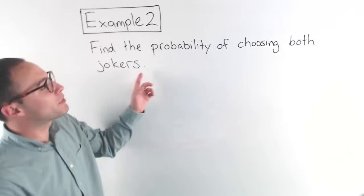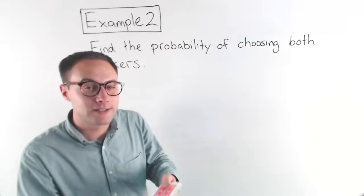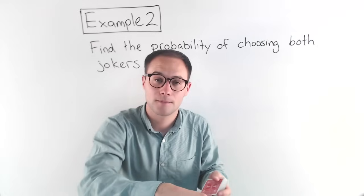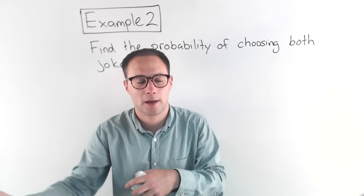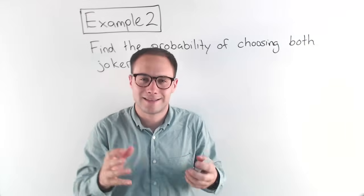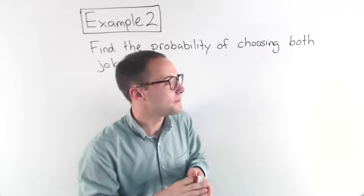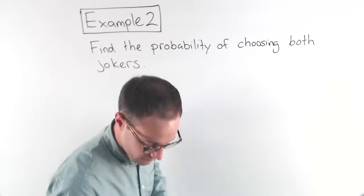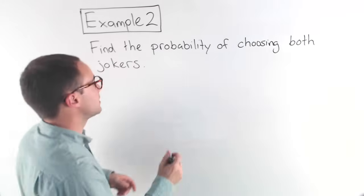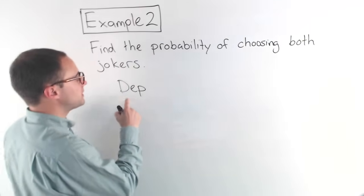Okay, example two, find the probability of choosing both jokers. Now, this is similar to what we did with Cal earlier, except with Cal, when he chose a joker, we put it back in the deck. This time, when we choose a joker, we're leaving it out. First, is this independent or dependent? If you choose something and put it back, well, then it doesn't affect the next time. But if you choose something and leave it out, it does. So you got to be careful with that. So this is a dependent event.